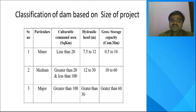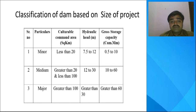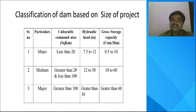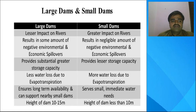The next classification is based on the size of the project — dams can be classified as minor, medium, or major. This classification is based on culturable command area, hydraulic head, and gross storage capacity.